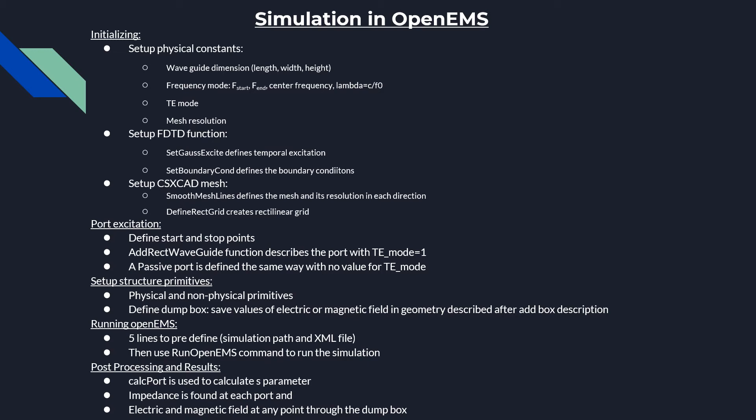The next step is defining the ports. First, we describe the start and stop points in each direction, then we use the ADDRECTWAVEGUIDE function to define two ports: one with TE mode 1 and the other being a passive port. The last step is to define the physical and non-physical structure primitives, after which we can run the program.